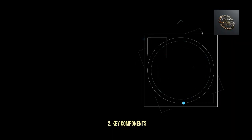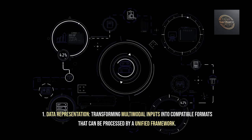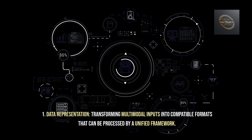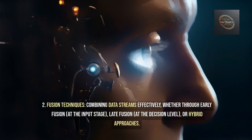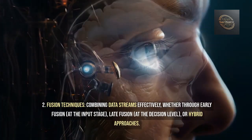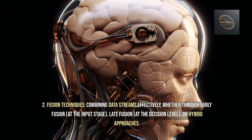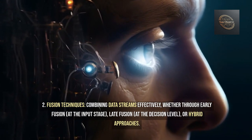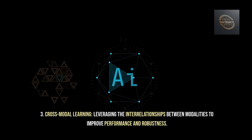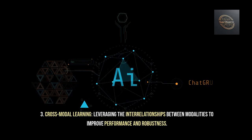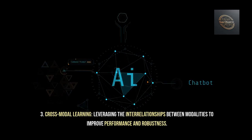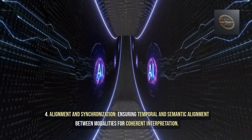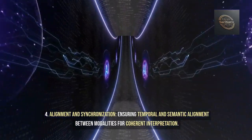Key components include: (1) Data representation — transforming multimodal inputs into compatible formats that can be processed by a unified framework. (2) Fusion techniques — combining data streams effectively, whether through early fusion at the input stage, late fusion at the decision level, or hybrid approaches. (3) Cross-modal learning — leveraging the interrelationships between modalities to improve performance and robustness. (4) Alignment and synchronization — ensuring temporal and semantic alignment between modalities for coherent interpretation.